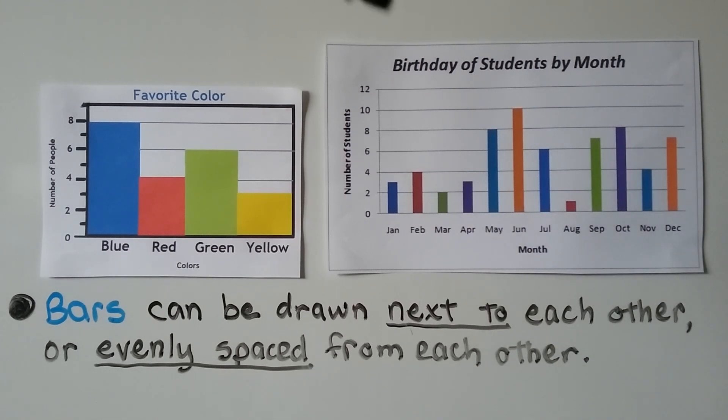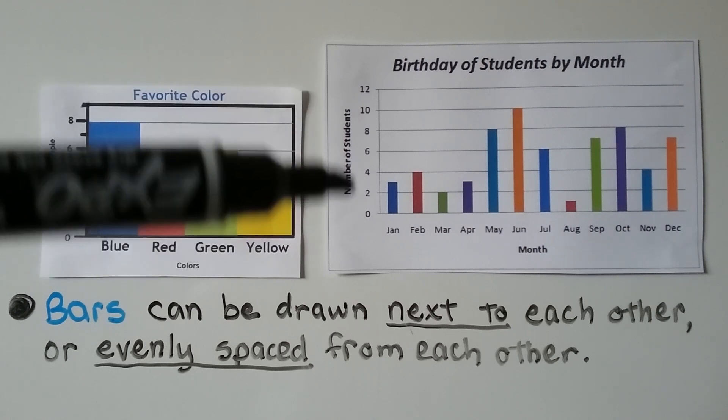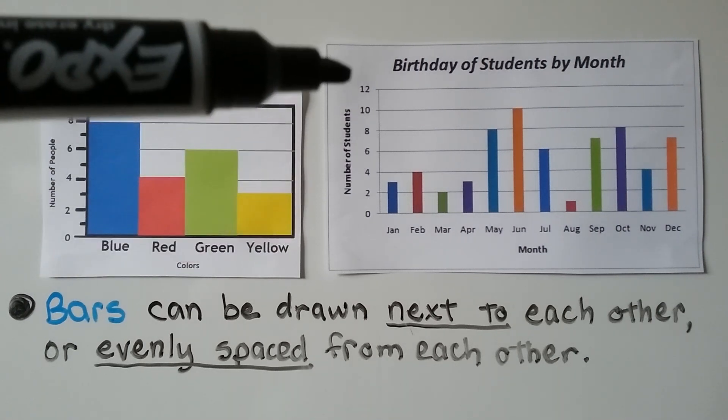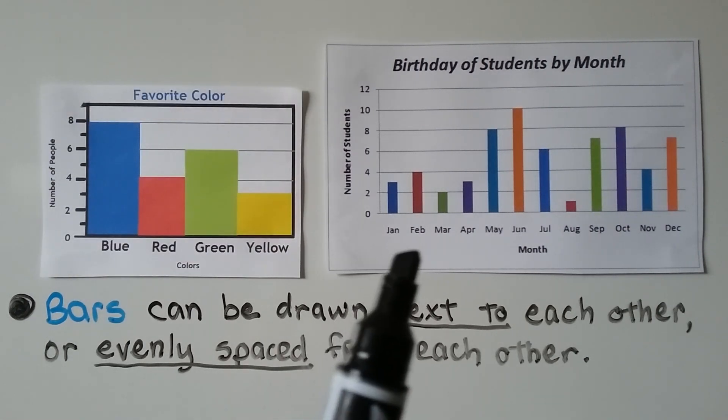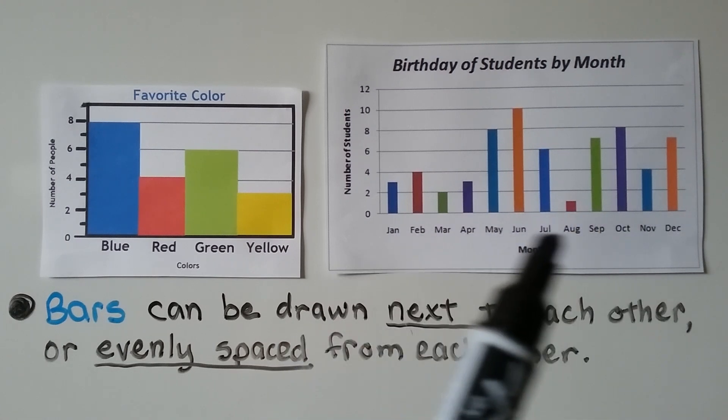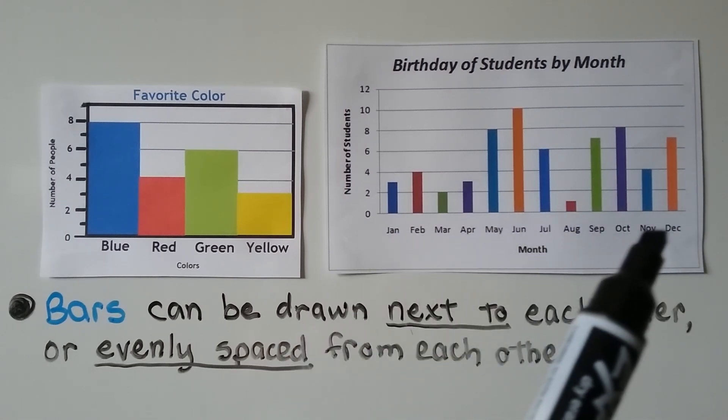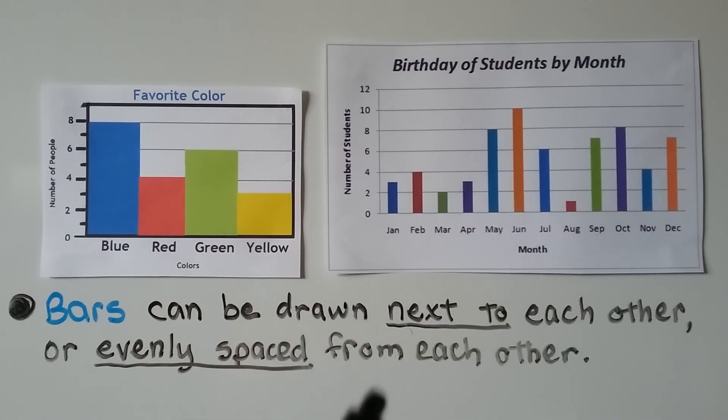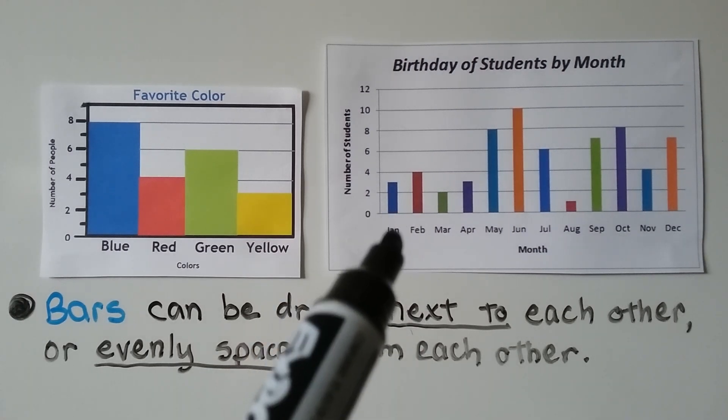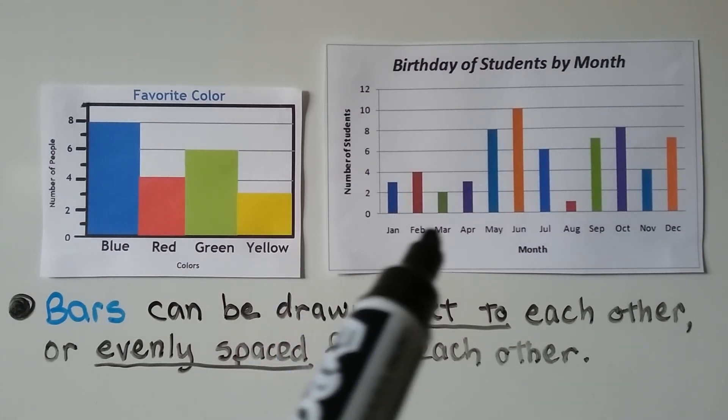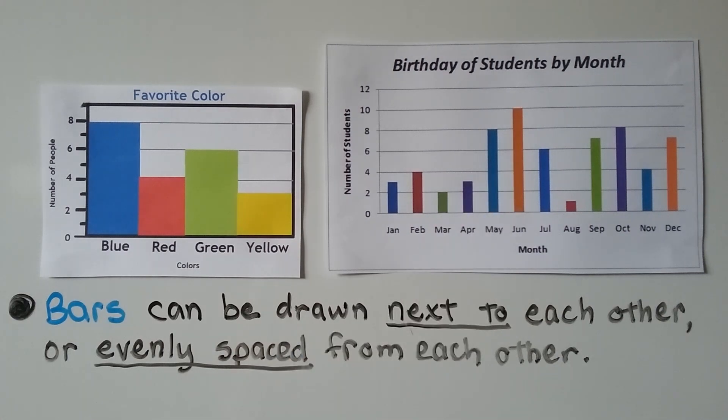This bar graph shows birthday of students by month. Our scale is the number of students, it goes from 0 to 12. And here's the months of the year. See how they're all abbreviated? Depending on how many students had a birthday for that month is how tall the bar is.